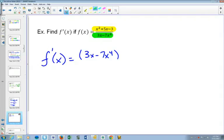I'll just use highlighters again for the final answer when you see it. So 3x minus 7x to the 4.